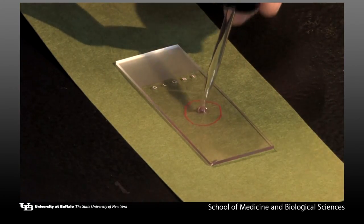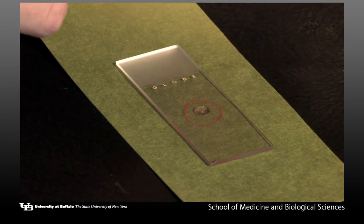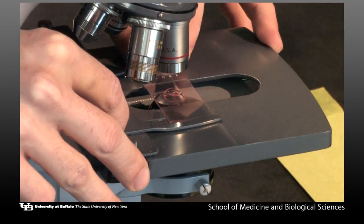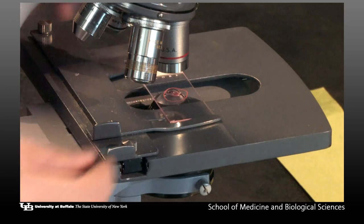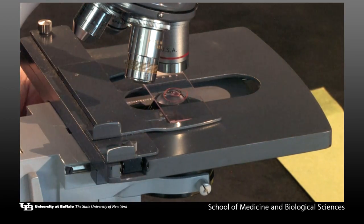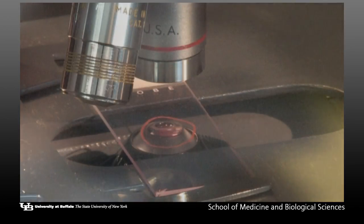Place one drop of immersion oil on the slide. Place the slide on the stage of the microscope. Attach the slide securely with the stage clips. Rotate the oil objective into place.